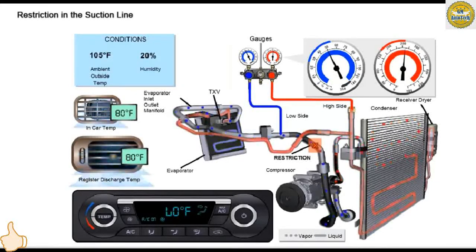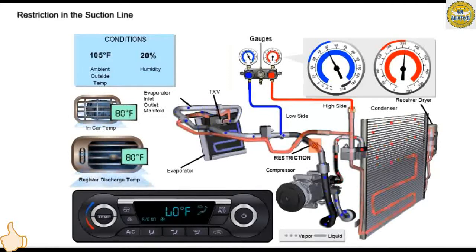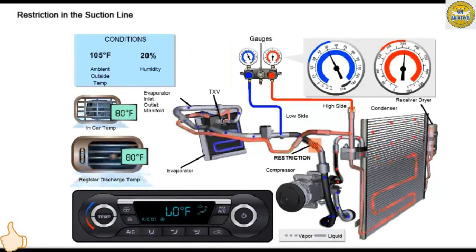When ambient temperature is 41 degrees Celsius (105 degrees Fahrenheit) and relative humidity is between 10 and 40%, the high side gauge will read between approximately 260 PSI and 175 PSI. Low side pressure will read between approximately 25 PSI and 55 PSI.